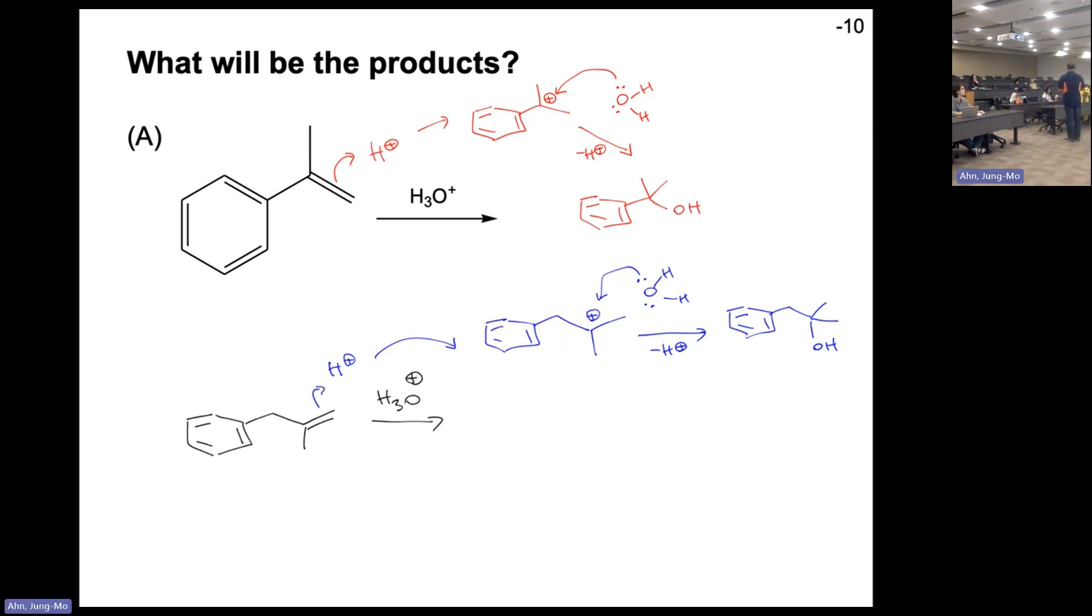When that is captured by the water, you're going to get alcohol just the same way this one did. That looks like the right product. This is exactly what we talked about using this example. Pi electrons get the proton, you get the carbocation formed, that carbocation is attacked by the water as a nucleophile, and then losing this proton you get the alcohol. It's exactly the same thing, so that has to be right.